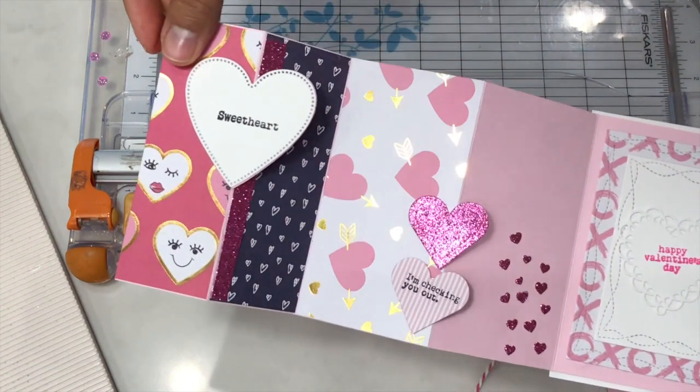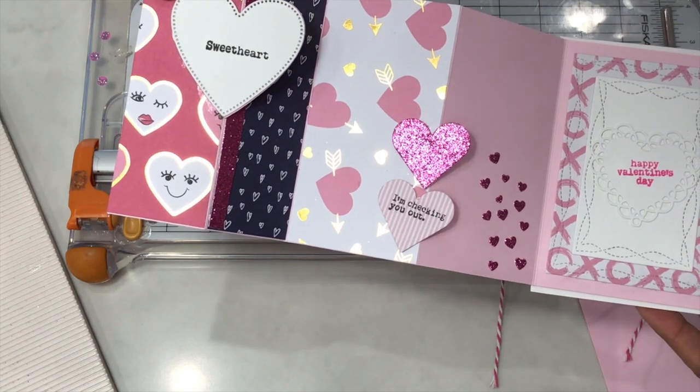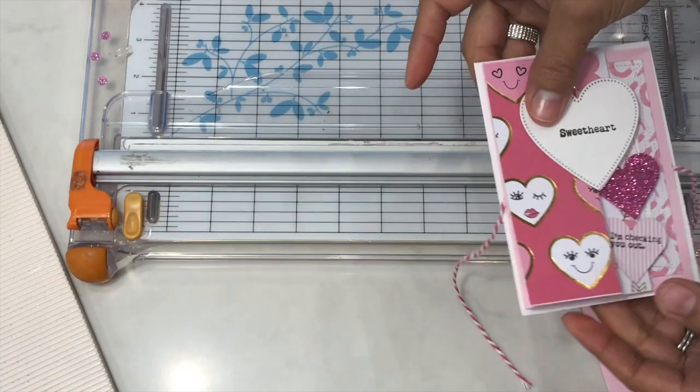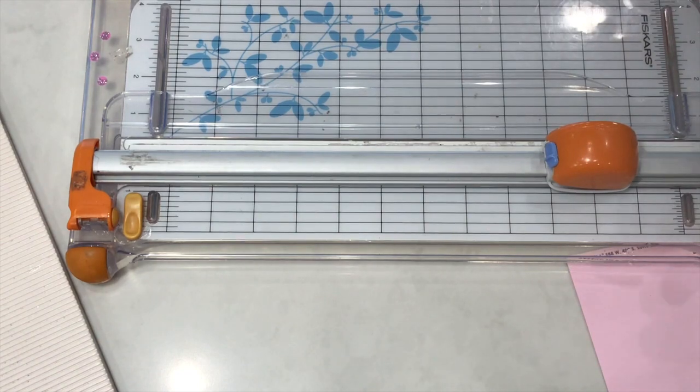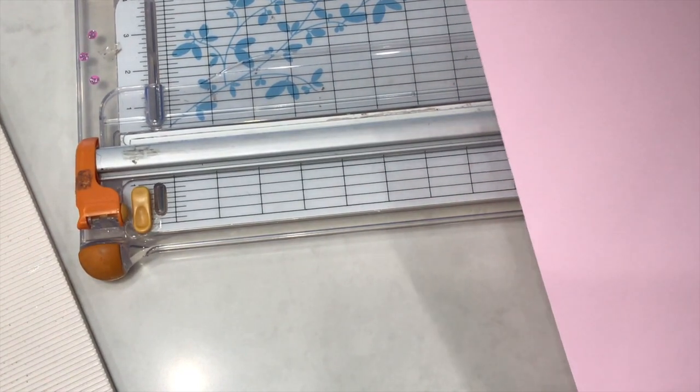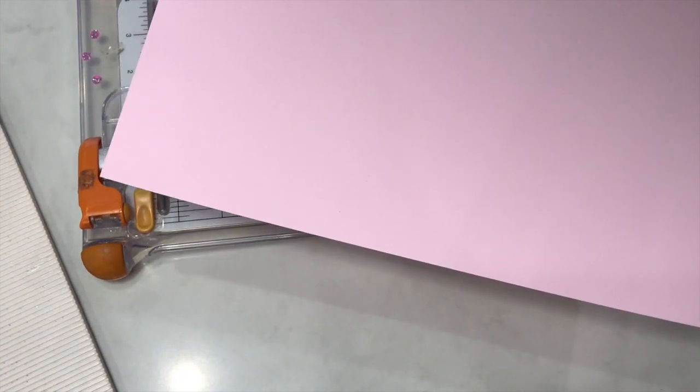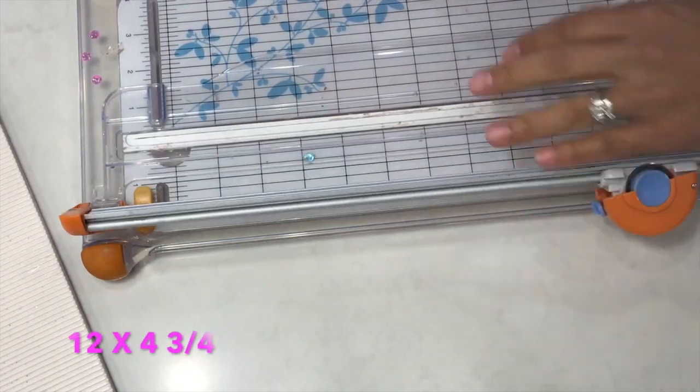As you can see, I made this adorable card that I shared with you in the video, I believe yesterday. All right, so let's get started. What you're going to need is a paper trimmer and a scoreboard. You're going to choose your color cardstock and cut it 12 by 4 3/4 inches.